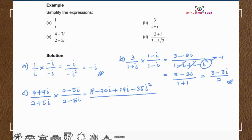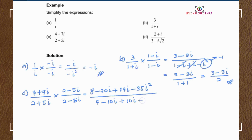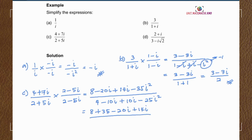For the denominator, we have 4 minus 10i plus 10i minus 25i squared. Simplifying by substituting i squared equals negative 1, we end up with 43 minus 6i over 29.